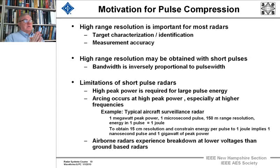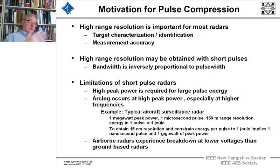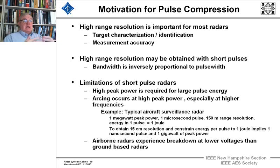There is a limitation on short pulses: very high peak power is required to get a large amount of energy in that pulse. You want to put as much energy on the target at far ranges so that you'll have enough signal-to-noise to see it. The two things that matter are power and aperture — power is the amount of average power that you can put on that target. If you can't get enough average power, enough energy on that target, you're at a disadvantage.